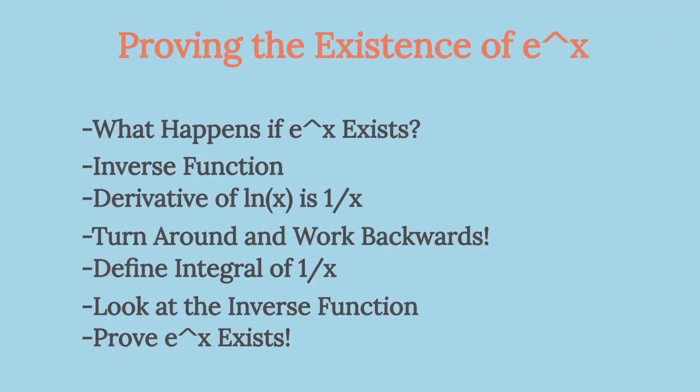We'll go through this proof by going first forwards and then backwards. We'll first explain what will happen if such a number for e to the x exists that is equal to its derivative. We'll look at its inverse function, the natural logarithm, and determine that its derivative must be 1 over x. Using that, we'll turn our work around and work backwards: look at the integral of 1 over x, prove that it's invertible, look at its inverse, show that it equals its derivative and is non-zero, thus proving the existence of the special number e.